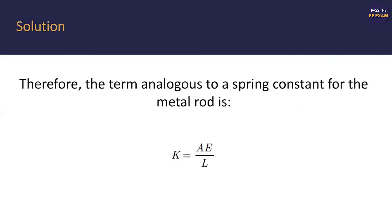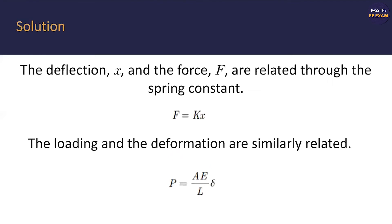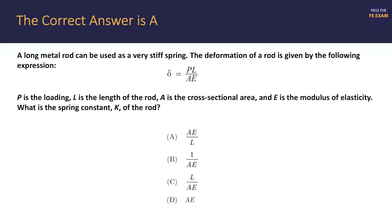Therefore, the term analogous to a spring constant for the metal rod is simply AE over L. As an engineer, you're probably thinking this seems a little too easy. If you really want to think through this a bit more, I would recommend that you don't, so you don't waste time in the exam. But if you wanted to, for the purposes of this exercise, go back and look at the two equations and work out the units of each term. As they cancel out, you will see that K is best represented by AE over L. Therefore, the answer to the question would be A: AE over L.